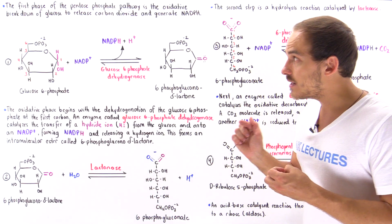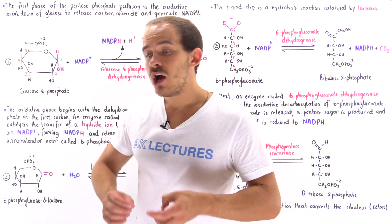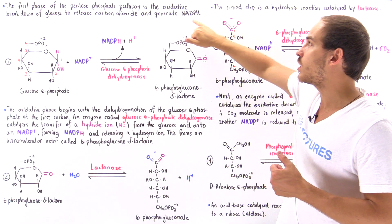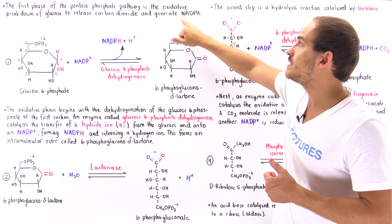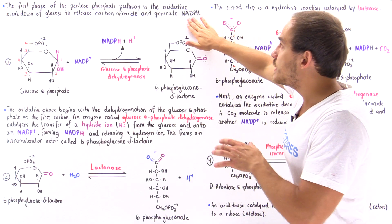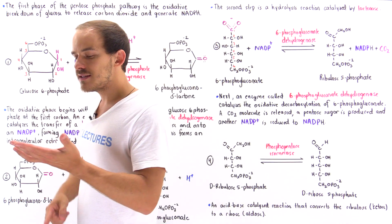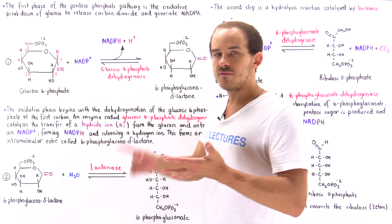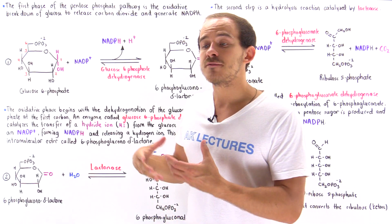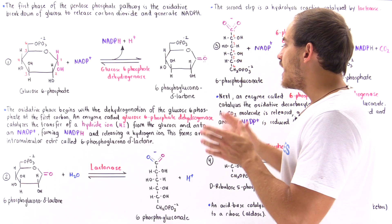The second reason why the pentose phosphate pathway is important is because it gives us a way to generate reducing agent molecules — molecules we call NADPH, which stands for the reduced version of nicotinamide adenine dinucleotide phosphate. This molecule is used in biosynthetic processes such as the building of fatty acids, cholesterol molecules, and nucleotide molecules. We also use NADPH molecules in different detoxification processes that take place inside our cells.